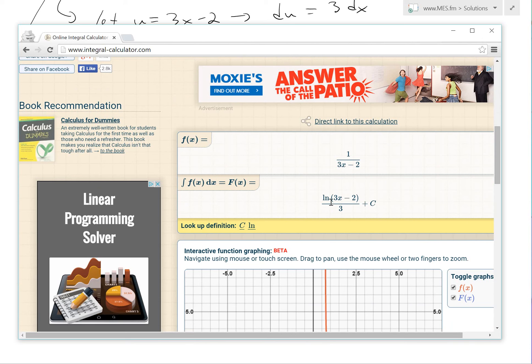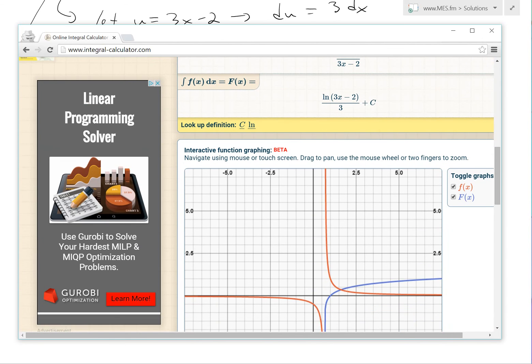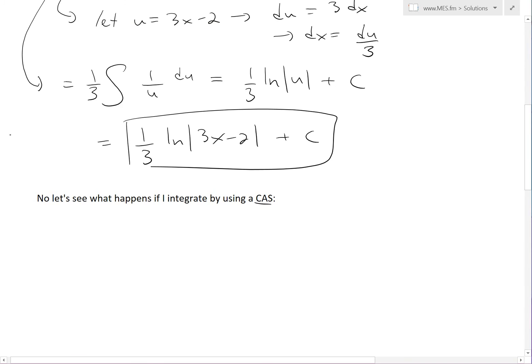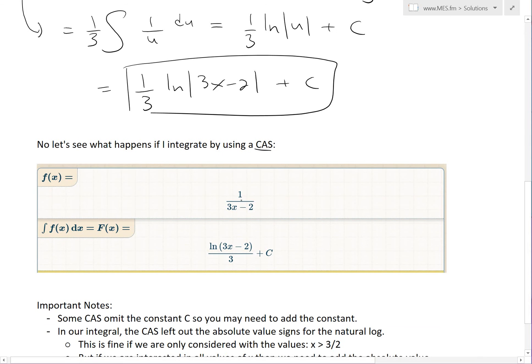We have basically the exact same thing. But notice it doesn't have an absolute value sign there. It's also a graph of the two functions. So if I copy and paste that answer, we get this right here. f of x equals to 1 over 3x minus 2. And then the integral right here is exactly what ours is. ln 3x minus 2 divided by 3 plus c. But this is not absolute value.